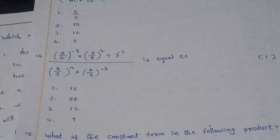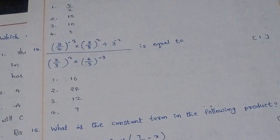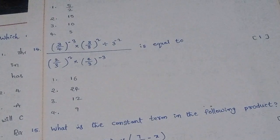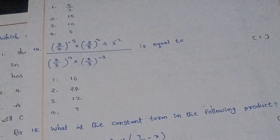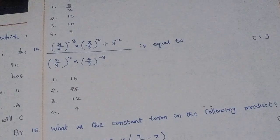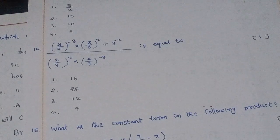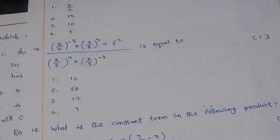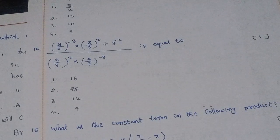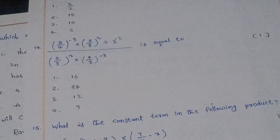Fourteenth question: (3/4)^(−3) × (3/8)² divided by [(3^(−2)) / (2/3)²] × (4/3)^(−3) is equal to what? The right answer is option 1: 16.